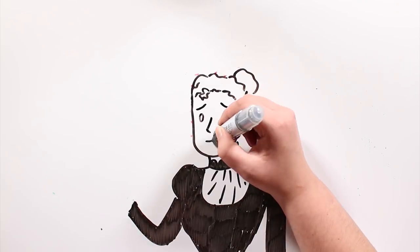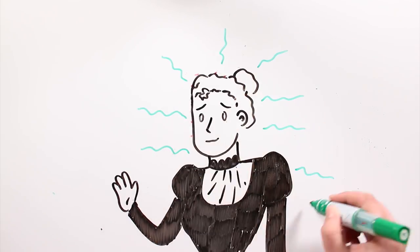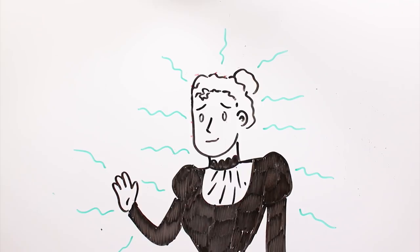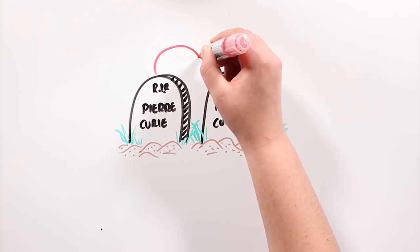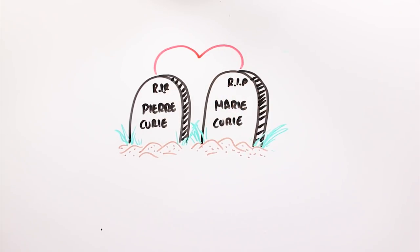Eventually, Marie Curie suffered an aplastic anemia, caused by a large exposure to radiation. After losing her eyesight, she died on July 4th, 1934, at a sanatorium in Pasi, in the French Alps.